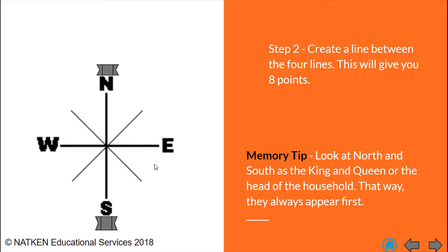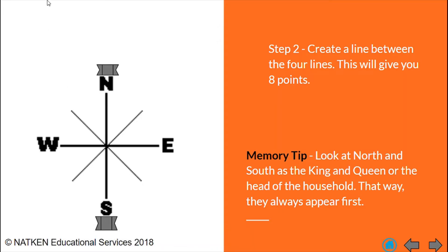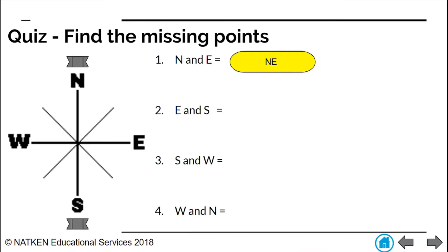That is one, two, three, four, five, six, seven, eight points. We have this little crown over north and over south because I want you to easily remember the importance of these two. So we look at north and south as our king and queen or they are the head of our household. That way they will always appear first when we are doing the eight-point compass.